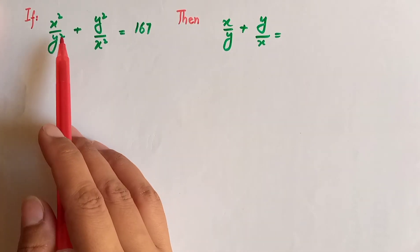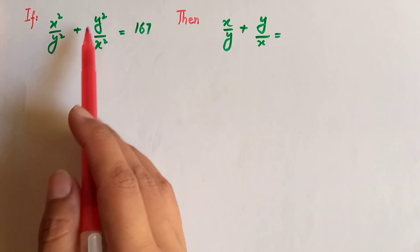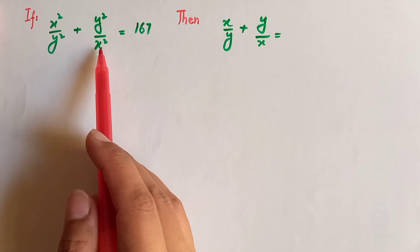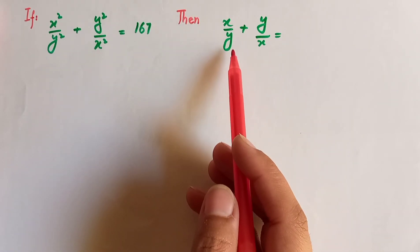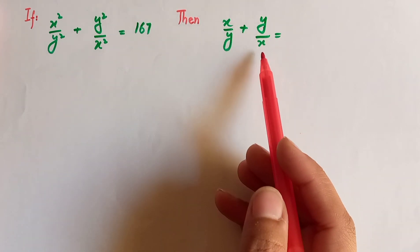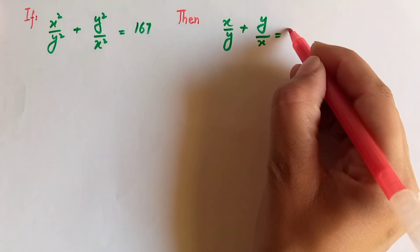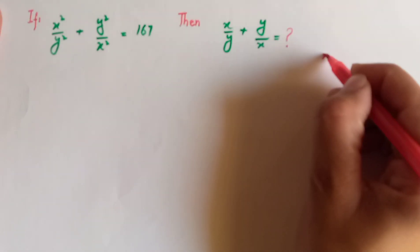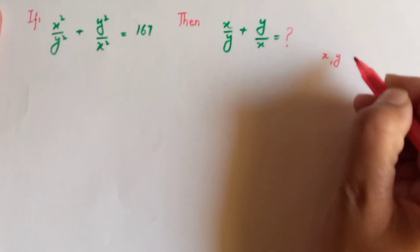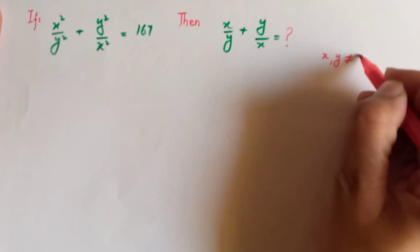If we have x squared divided by y squared plus y squared divided by x squared is equal to 167, then x divided by y plus y divided by x we have to find it out. This is a rational problem where x and y both are not equal to 0.